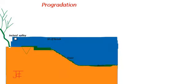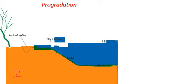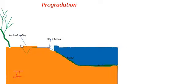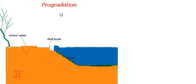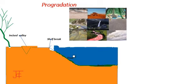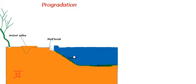Progradation is the seaward migration of shoreline. Progradation is the process of sedimentation in marine basins in which sediment supply is greater than generation of accommodation space.